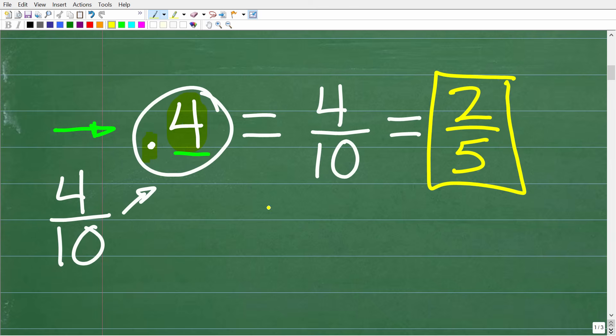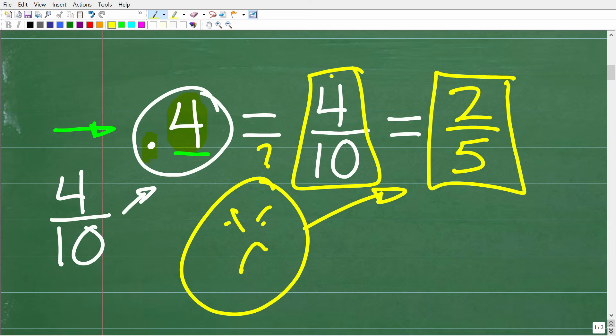Now if you're not quite sure, you might be saying, 'I'm not sure you did this right.' Well, what you can do to check that you wrote the correct fraction for a decimal is take the numerator and divide it by the denominator. Get your calculator and divide two by five, and you'll get 0.4.